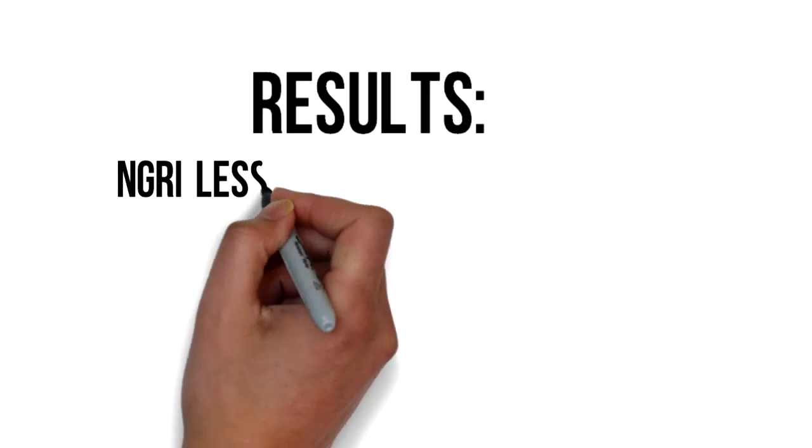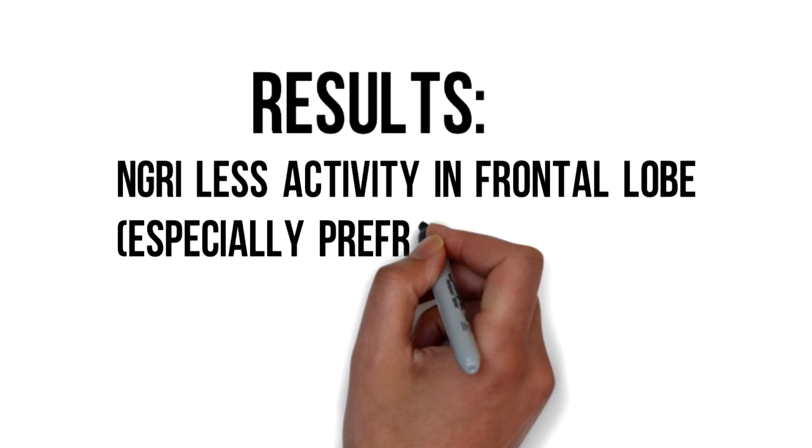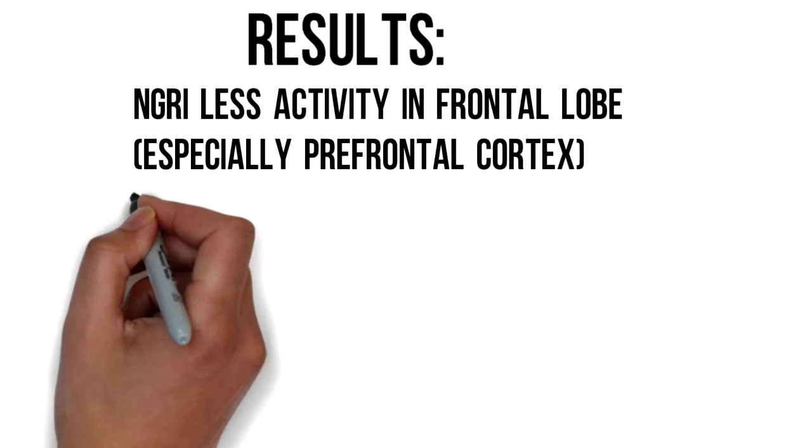The NGRIs were found to show less activity in the frontal lobe, especially the prefrontal cortex which is associated with rational thinking, self-restraint, and memory.